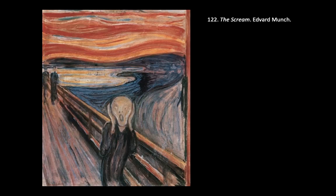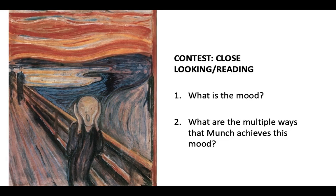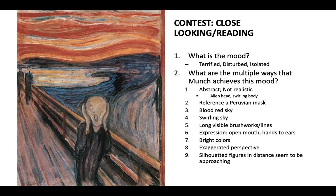That leads us to The Scream by Edvard Munch. When we look at it, you want to closely look at the painting, thinking about your content and your function. What is the mood that's being conveyed, and what are the multiple ways in which Munch achieves this mood? His mood is very terrified, disturbed, and a bit isolated. If you look at the imagery, it's very abstract and stylized — this is not a realistic depiction of a person. It almost feels like they're an alien person with a swirly, curvy body. Some art historians have said that he was interested in Peruvian masks as well as South American mummies, so it kind of recalls that corpse-like creature as well.